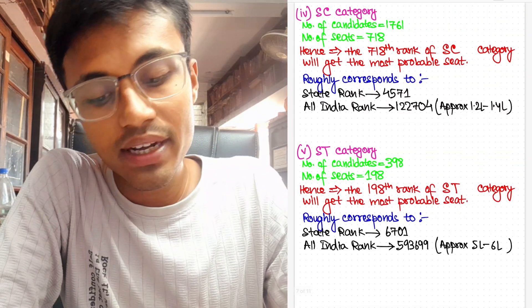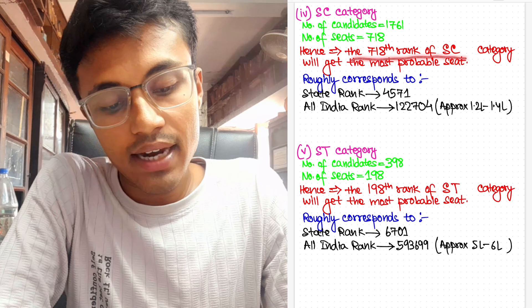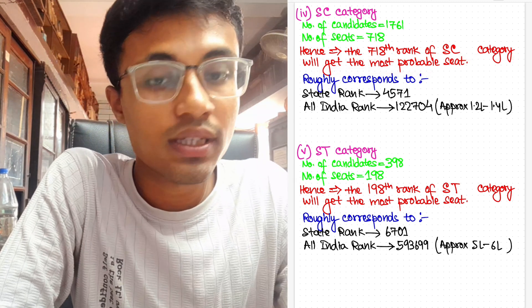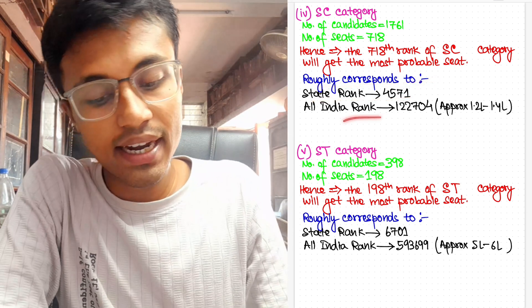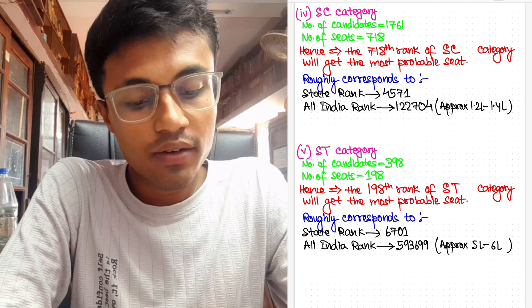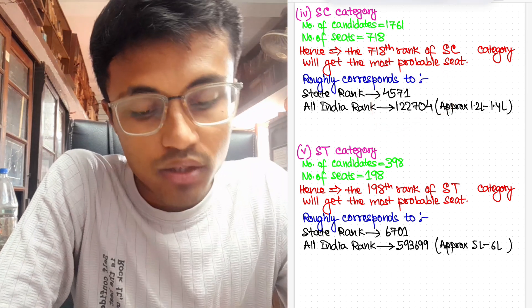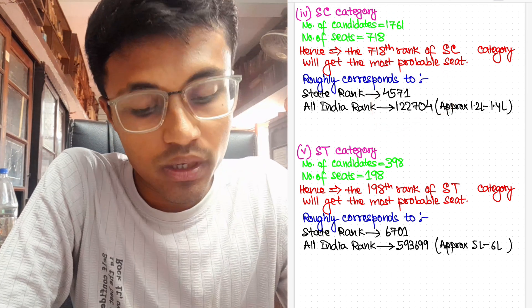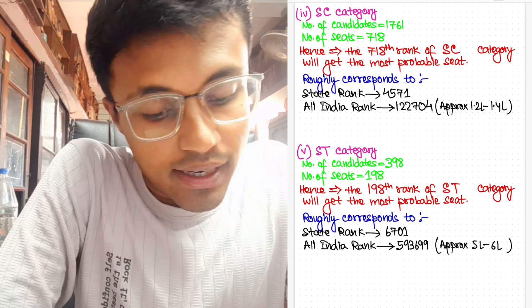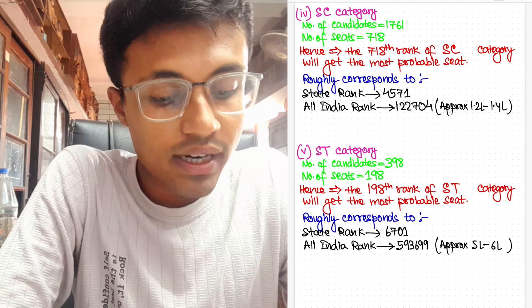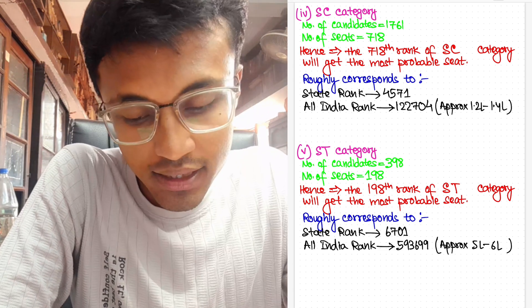Now for SC category, the number of candidates are 1,761. The number of seats are 718. Hence the 718th rank of SC category will get the most probable seat in serial order. Now this roughly corresponds to state rank 4,571 and All India rank is 1,22,704. Now all this data is from that provisional list which I have taken out. So nothing is made on my own. It's all the data provided to us by the WBMCC site. Now my approximation would be that anything between 1.2 lakhs—any candidate or any student with All India rank 1.2 lakhs to 1.4 lakhs would easily get the seat in SC category.